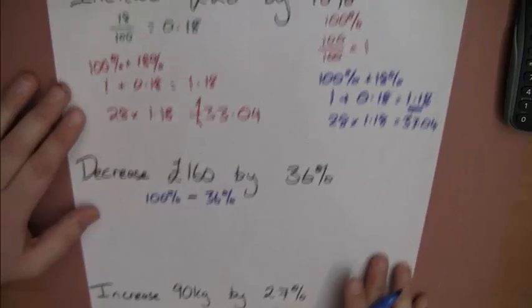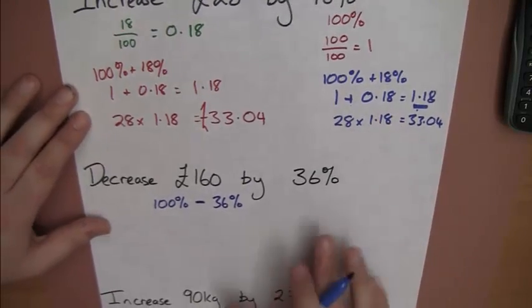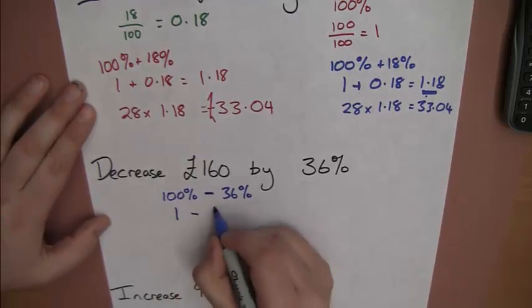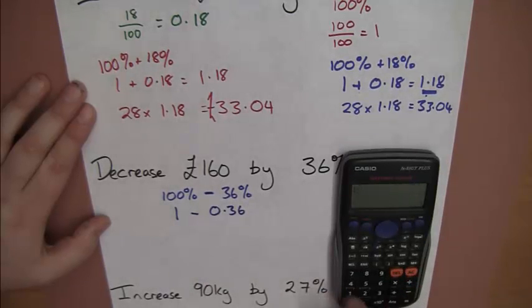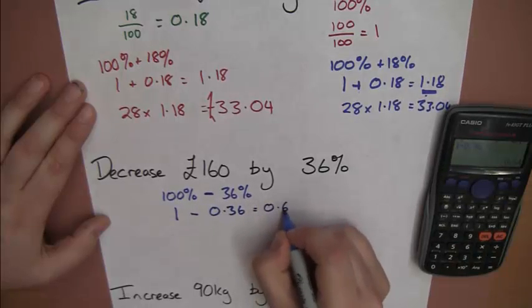Let's do the same trick as we did up here. We need to turn them into decimals. So, 100%, that's 1, minus 0.36. We could do that on our calculator, so let's do that now. 1, take away 0.36. That's 0.64. Right, okay, 0.64. And that's our multiplier. It's still called the multiplier, even though we're decreasing.